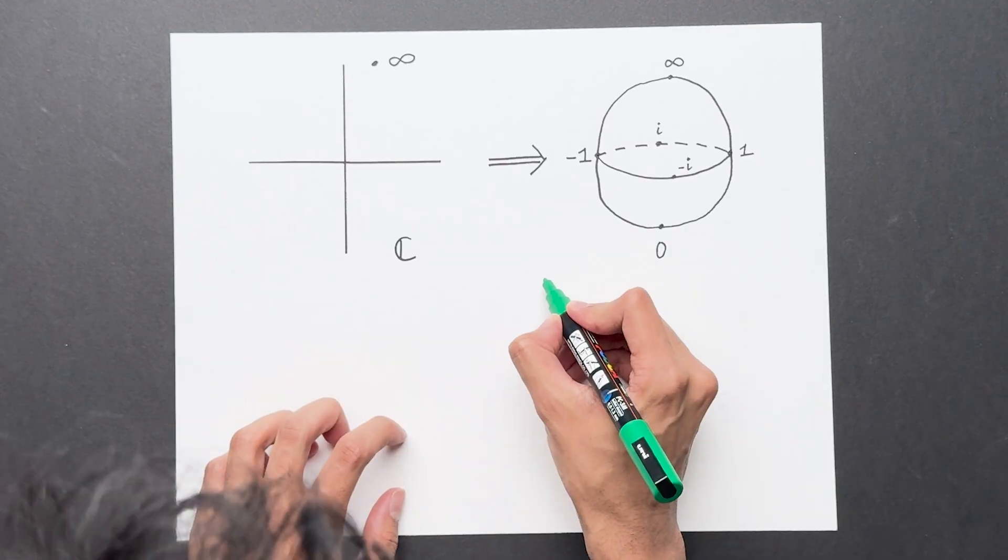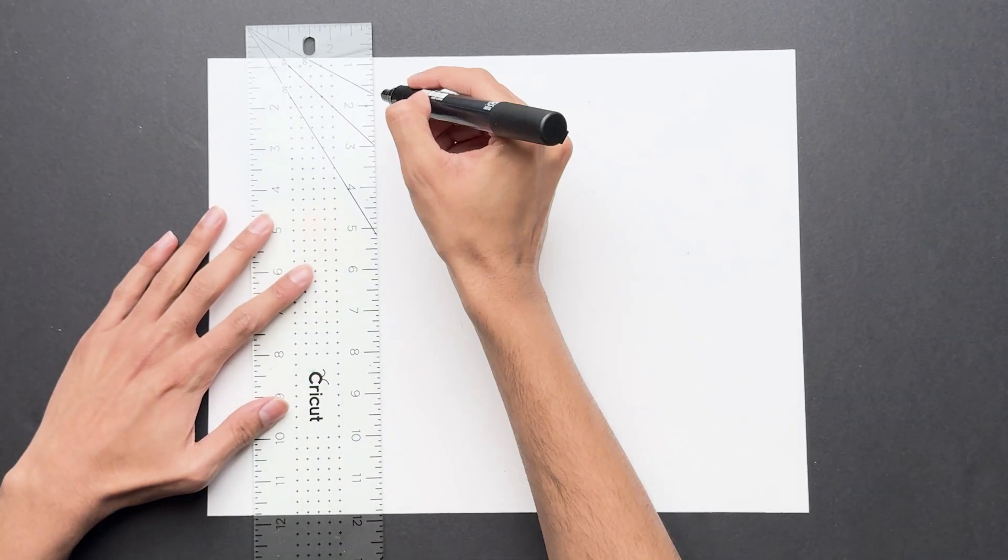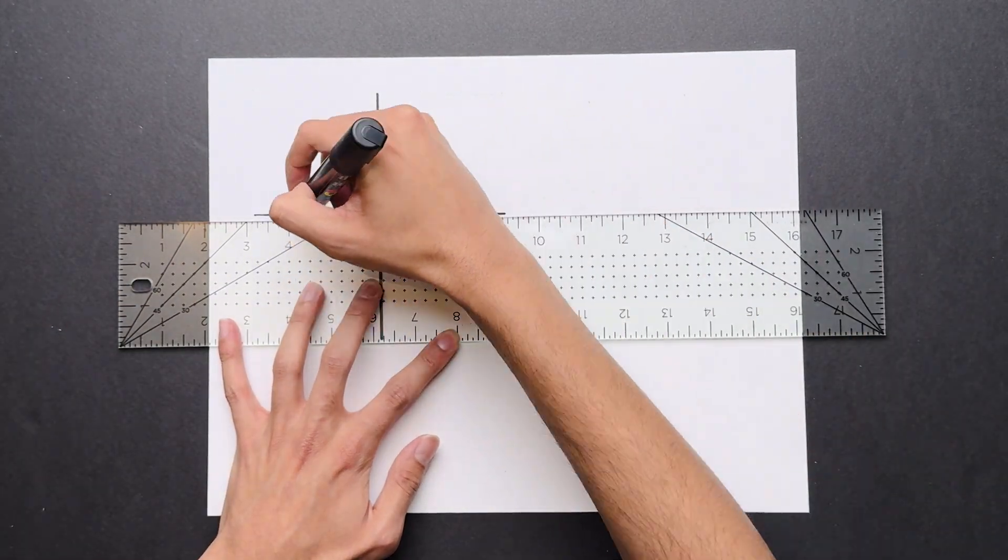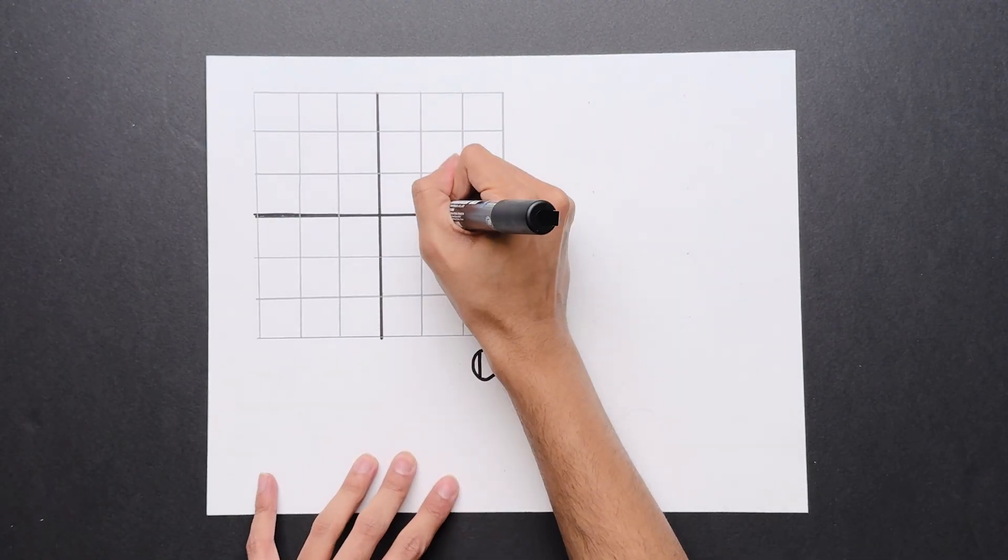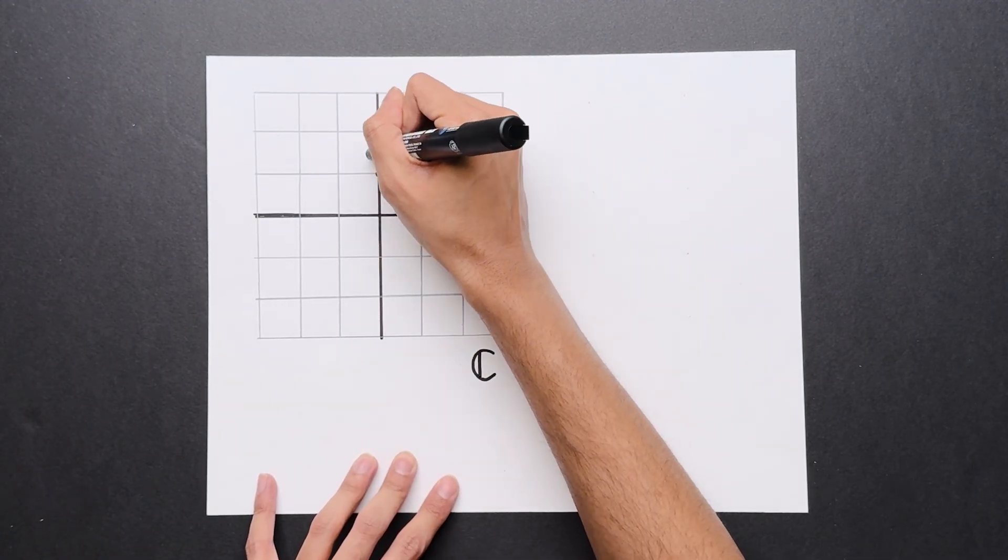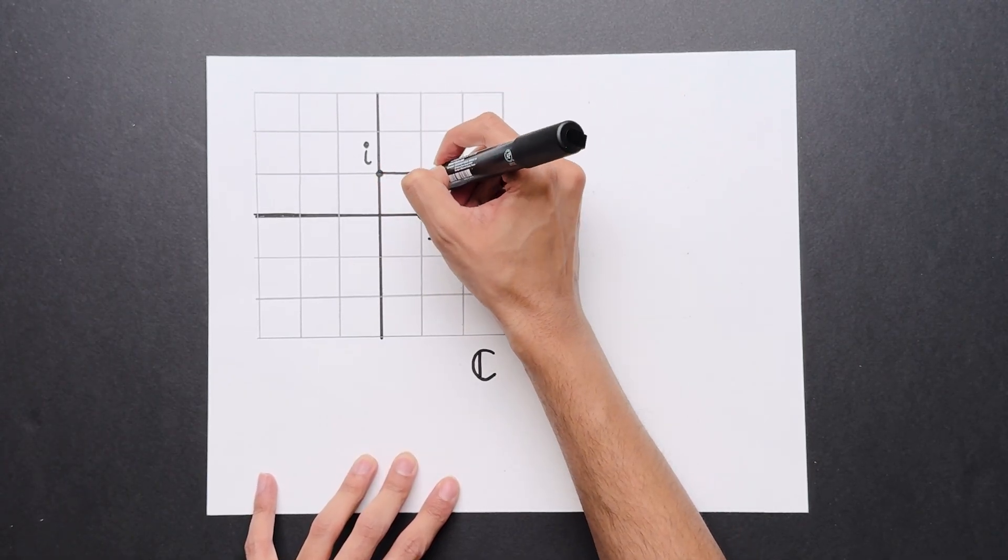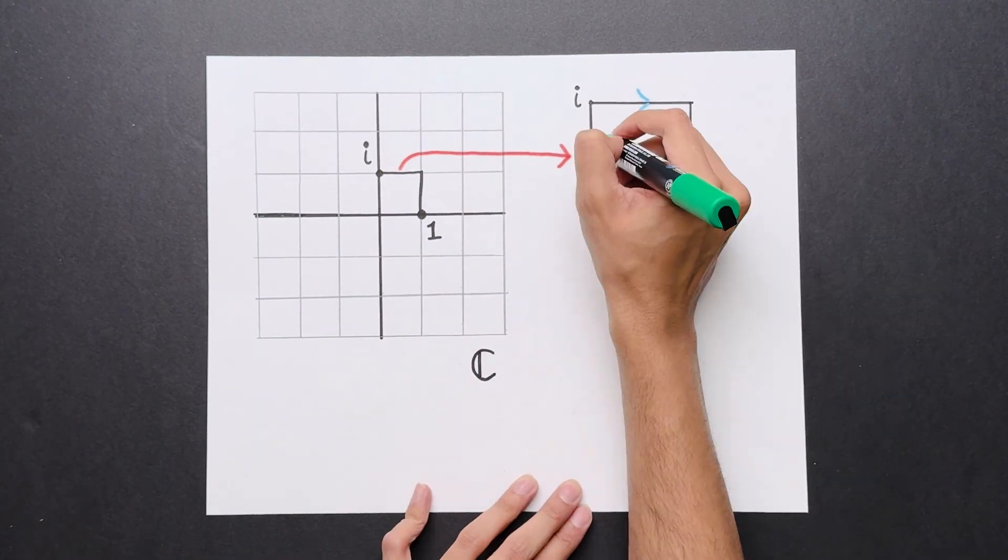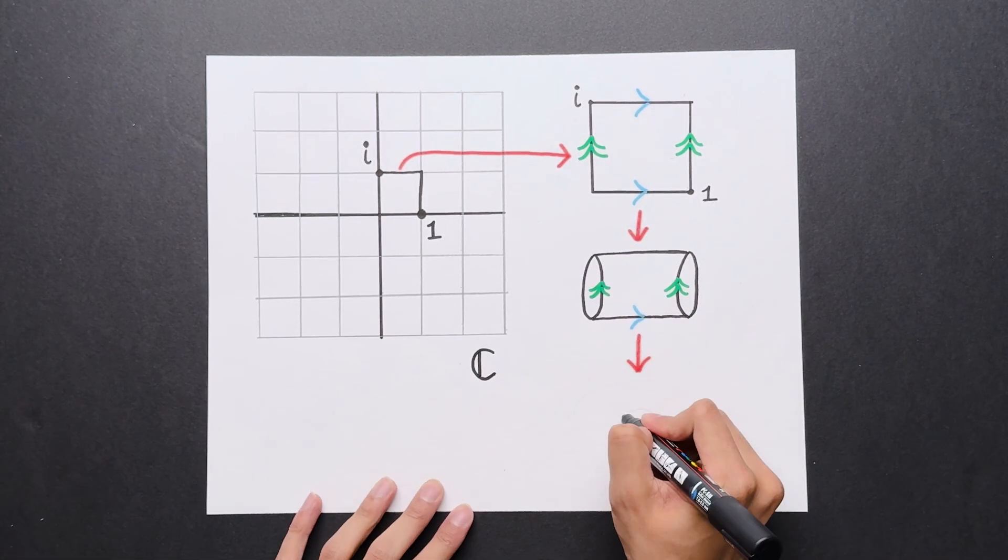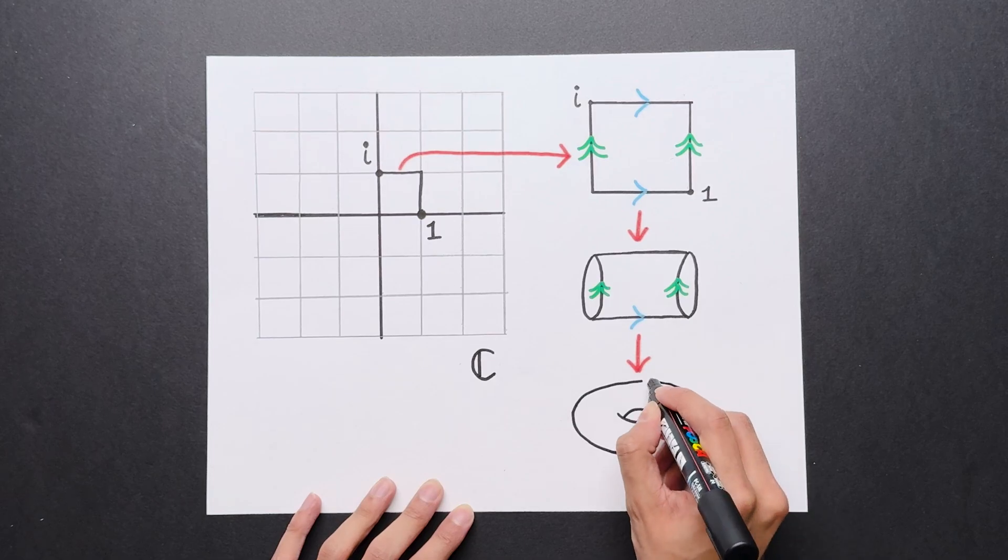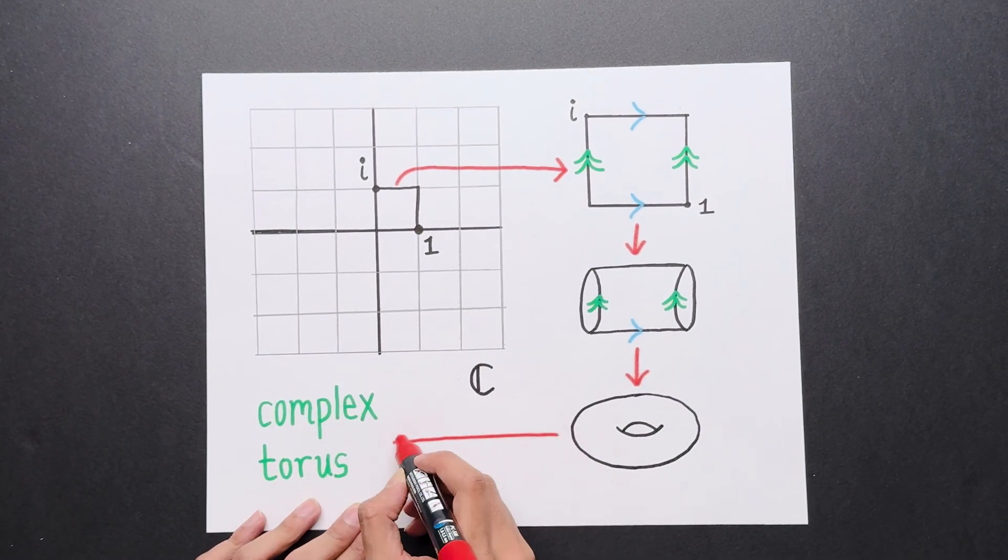Where we left off, we were talking about the Riemann sphere. Now let's look at a slightly more complicated example. This is the example called a complex torus. Take the complex plane, and imagine a square grid overlaid on top of it. Say for simplicity that this point is 1 and this point is i, so that the grid hits all complex numbers with integer coordinates. Now zoom into one square in this grid. If you glue the top and bottom together, you get a cylinder. If you stretch and glue the ends of the cylinder, you get a torus. Now this is referred to as a complex torus, because it's a torus that's cut out from the complex plane.